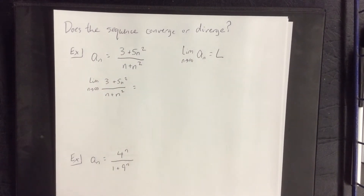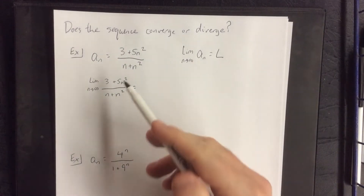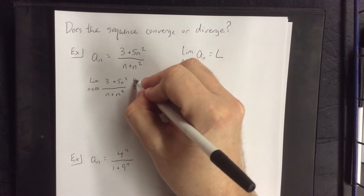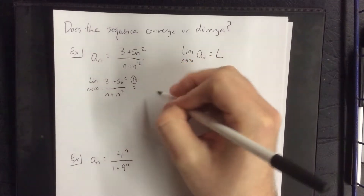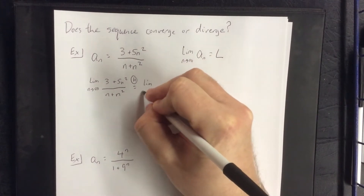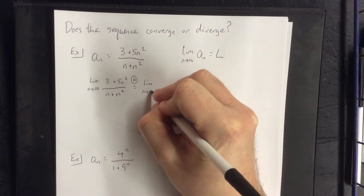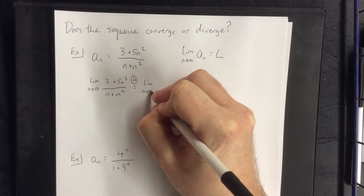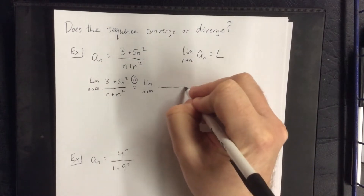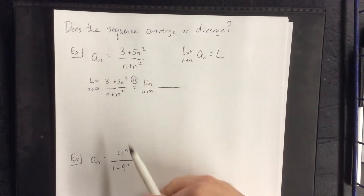If we simply allow n to go to infinity, the numerator goes to infinity and the denominator goes to infinity. There are a couple of different ways we can deal with this. One of them would be to make use of L'Hôpital's rule and differentiate the top and the bottom with respect to the appropriate variable — in this case, n.